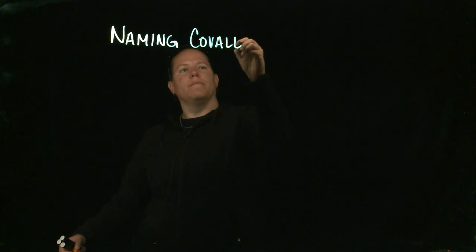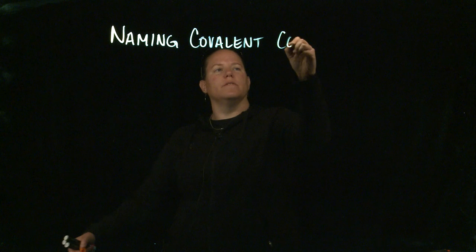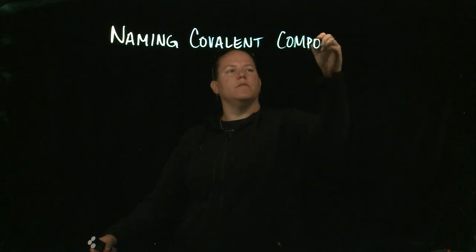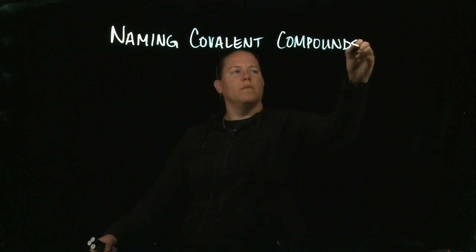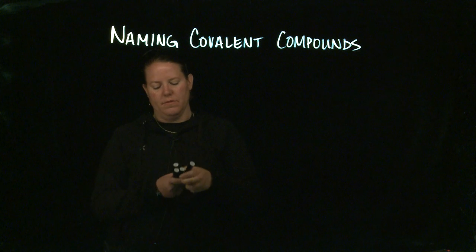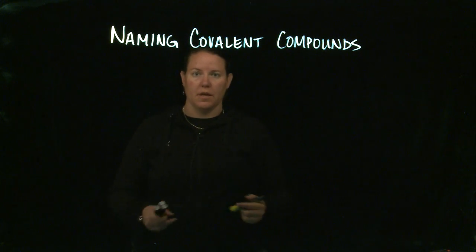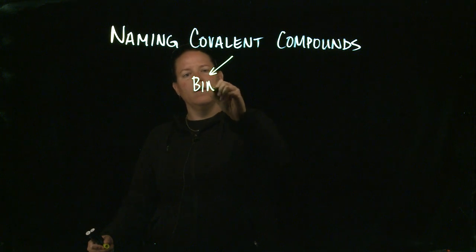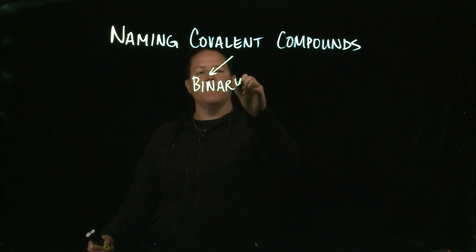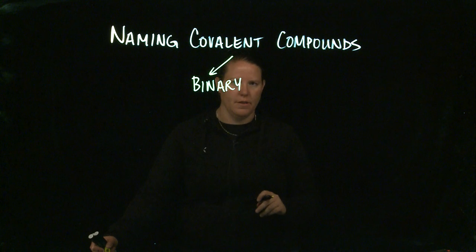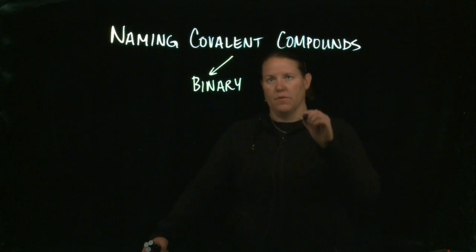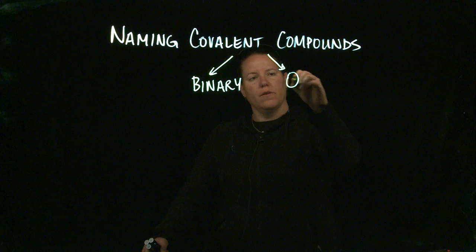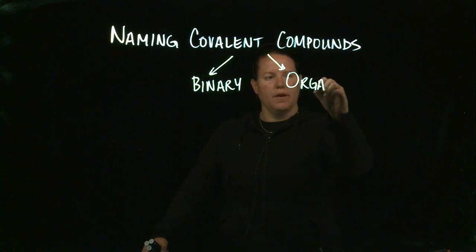When we're learning how to name covalent compounds, generally in beginning chemistry we think about two different things: binary covalent compounds, which we'll exclusively focus on in the context of general chemistry, and organic compounds.